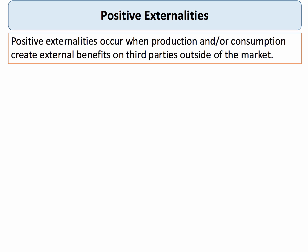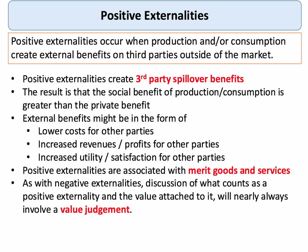A positive externality occurs when production and/or consumption of a good or service creates an external benefit on a third party that lies outside of the market transaction. Positive externalities essentially create third-party spillover benefits — external benefits. Other people are affected in a positive way by the decisions of another agent in the market. The result is that the social benefit of production or consumption will be higher than the narrow private benefit.